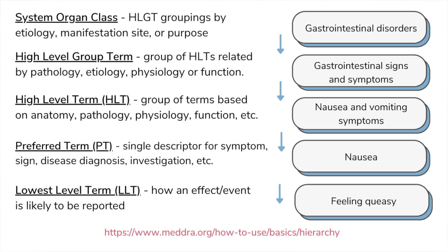A preferred term can have multiple lower level terms — you can report things in a couple of different ways — but there's only one link going up. Related preferred terms are grouped together into higher level terms, which are grouped based on anatomy, physiology, pathology, or function. Those high level terms are then linked into high level group terms, and those are rolled up again into system organ classes — looking at things like infections, infestations, manifestation sites, purposes, surgical/medical procedures, or GI disorders, for example. You'll see it layering all the way up from what's reported into a class of actual reactions at the top.